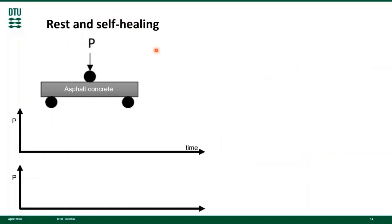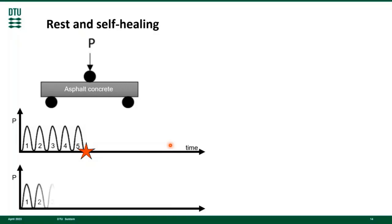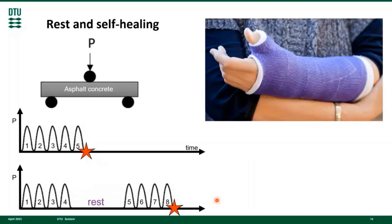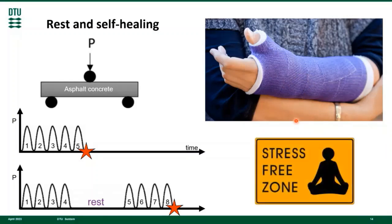Asphalt concrete has an innate capacity to self-heal during rest periods. Here is an example: we torture a small asphalt beam until it breaks, which takes 5 consecutive cycles. However, if we stop after 4 cycles before failure and allow rest time, the material heals and can endure 4 more cycles. This is similar to humans, where rest is needed in order to heal bones, and weekends and vacations are essential to cope with life's stresses.